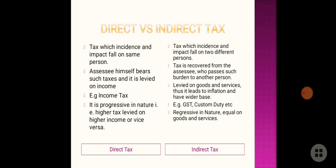Direct tax is a tax where the incidence and impact fall on the same person — a single person. Whereas a tax where the incidence and impact fall on two different persons is called indirect tax. The assessee himself bears such taxes and it is levied on income — that is direct tax. Whereas a tax recovered from the assessee who passes the burden to another person is called indirect tax. The example of direct tax is income tax, and the example of indirect tax is GST, which is levied on goods and services.